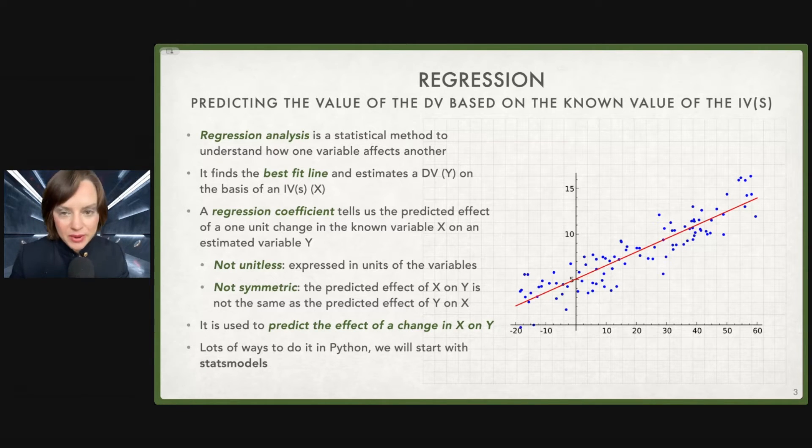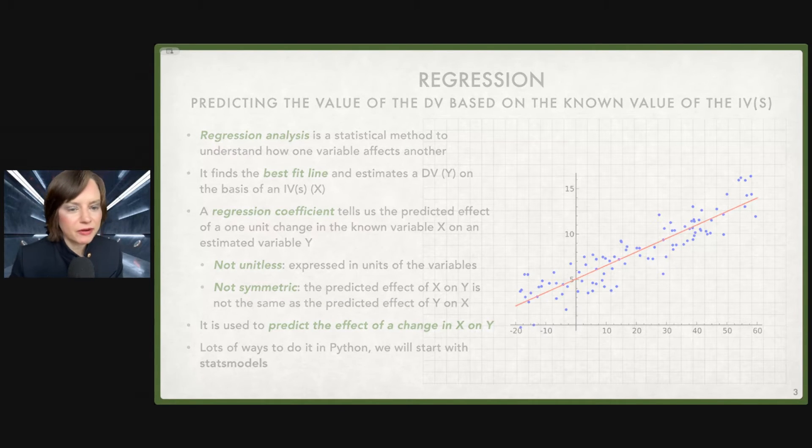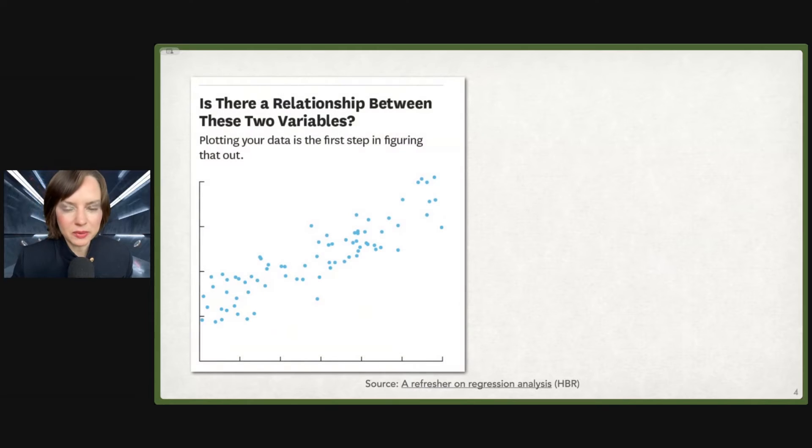We use regression to predict the effect of a change in X on Y. There are lots of ways to do it in Python. I have some examples in my online textbook where we do it using statsmodels. But for now, let's talk about it in human terms.